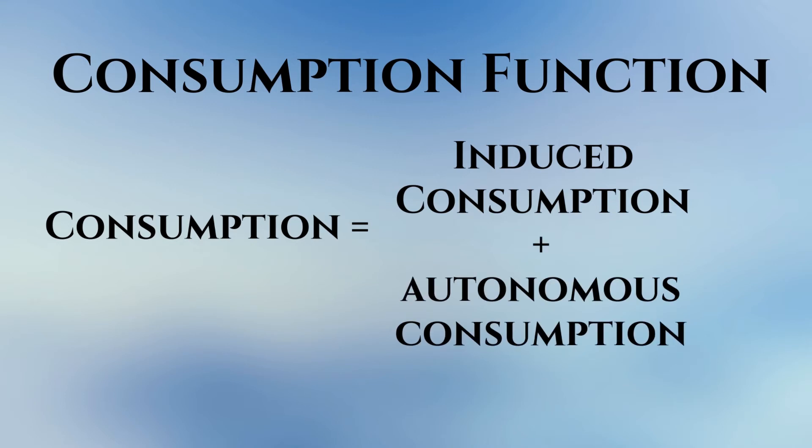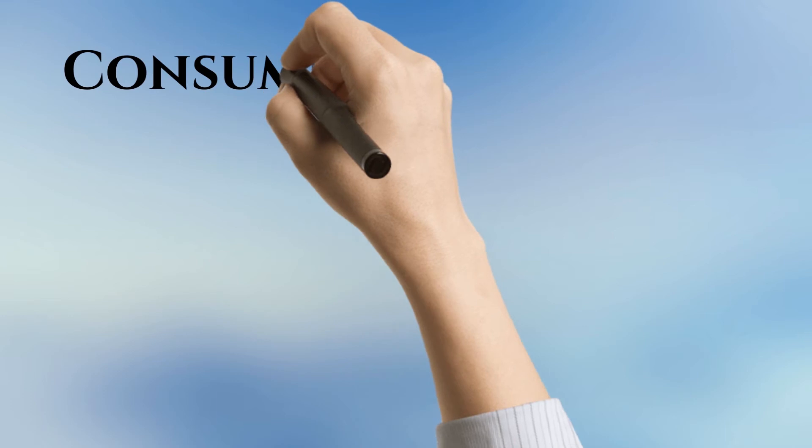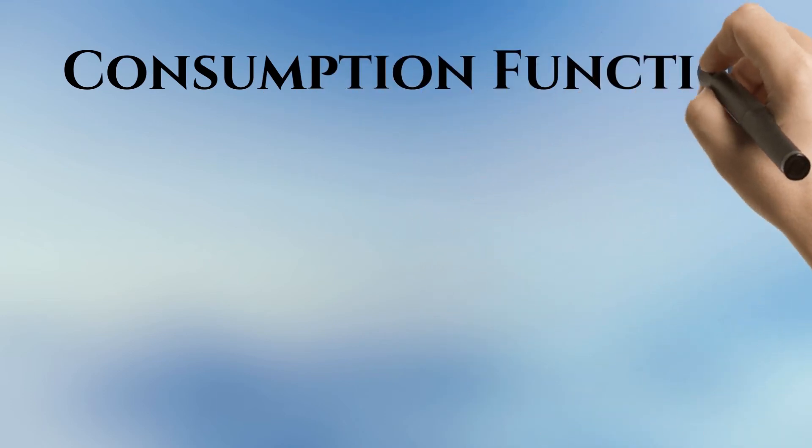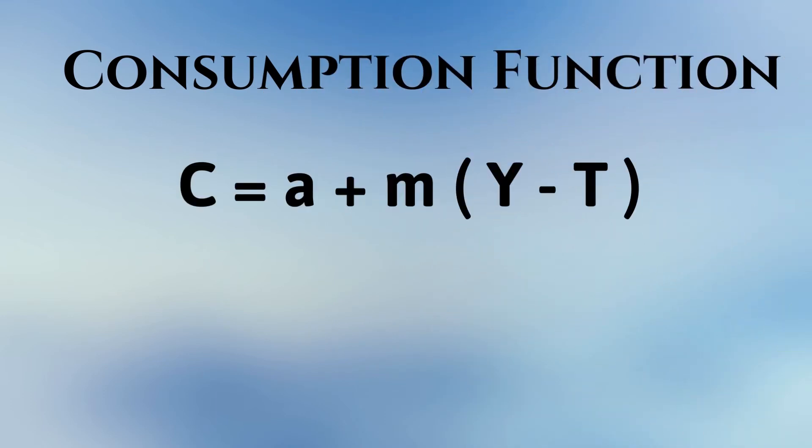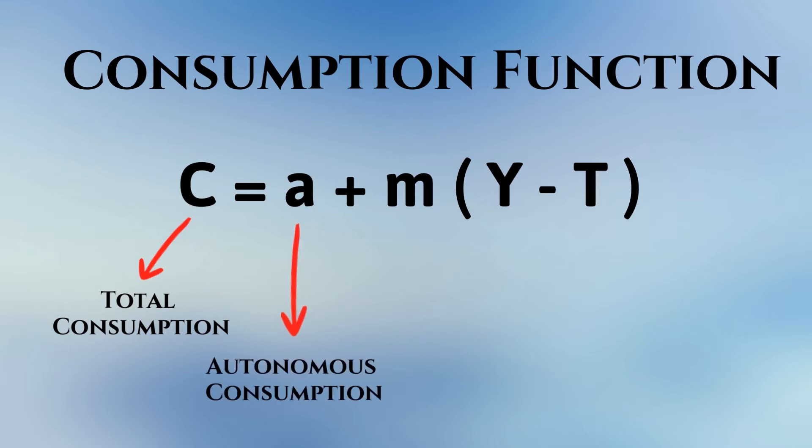This situation may be expressed mathematically as C equals A plus M of Y minus T. C is the total consumption, A is the autonomous consumption, and M of Y minus T is the induced consumption.